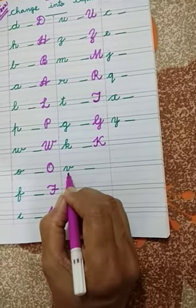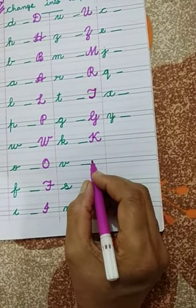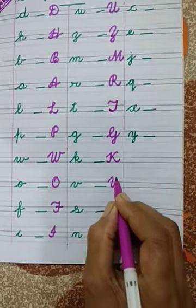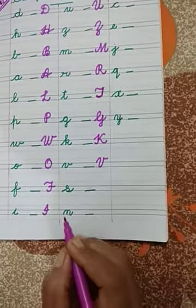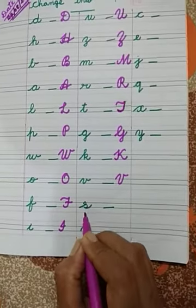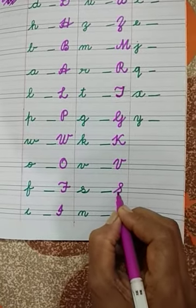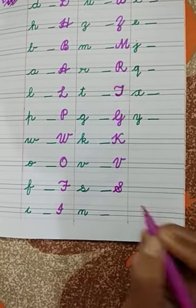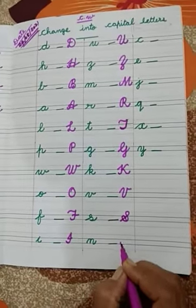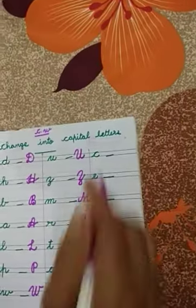This is Cursive Small letter V. We have to write here Cursive Capital letter V. Change into Capital letter. This is Cursive Capital letter. He has to write here Cursive Capital letter N. This is letter N. You have to write here Cursive Capital letter N.